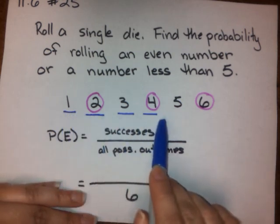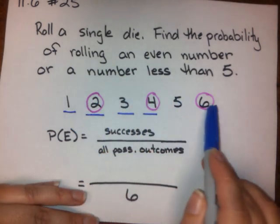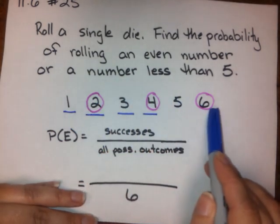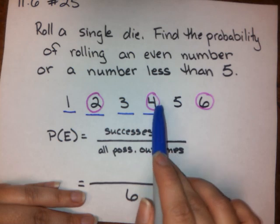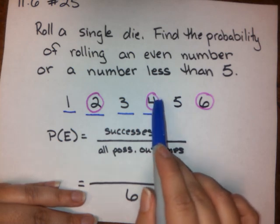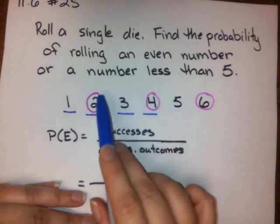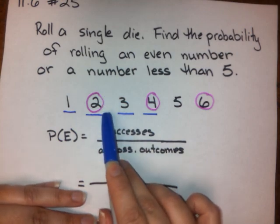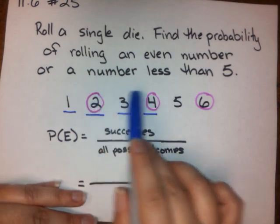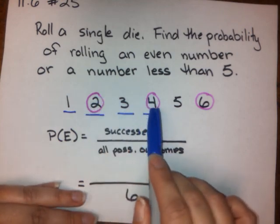I know that there are 4 numbers less than 5, and I know that there are 3 even numbers. But you can see that some of them are doubled up — 4 is even and it's less than 5, and 2 is even and it's less than 5. So we can't count those twice; we can only count them once.